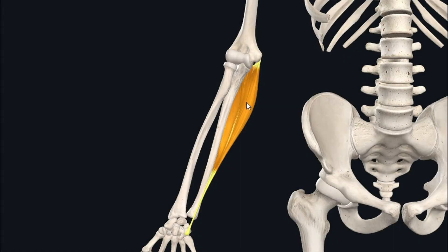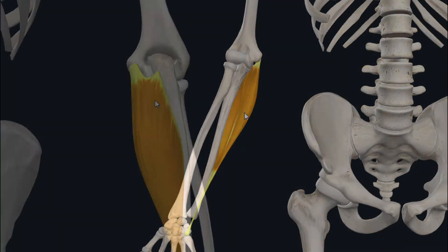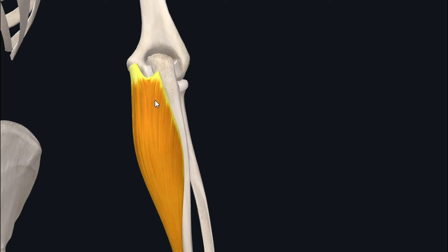The flexor carpi ulnaris is a fusiform muscle located in the superficial flexor compartment of the forearm, and it is the most medial of all the superficial flexors of the forearm. This muscle has two heads of origin: a small humeral head and a large ulnar head.